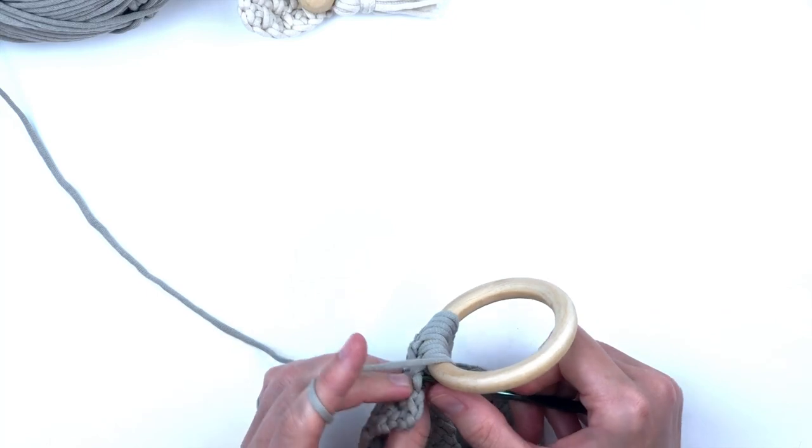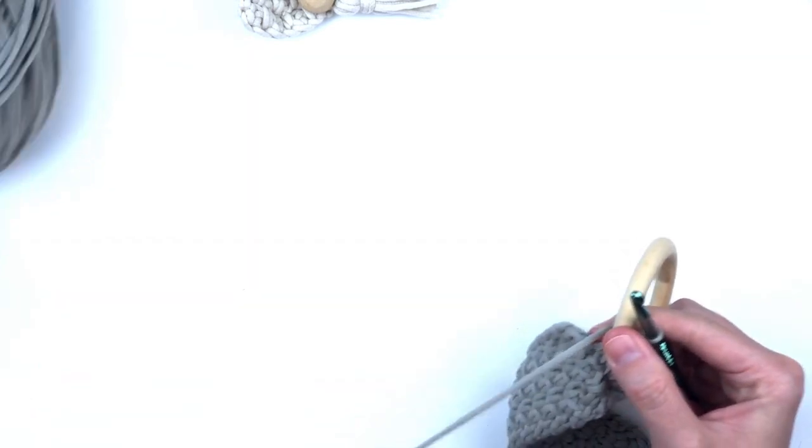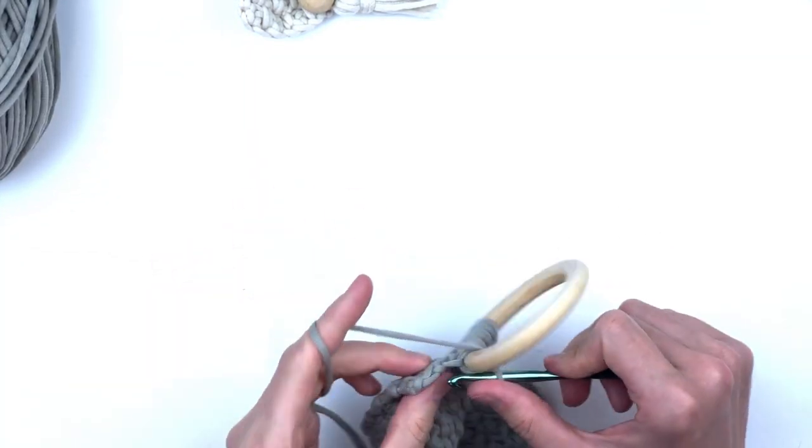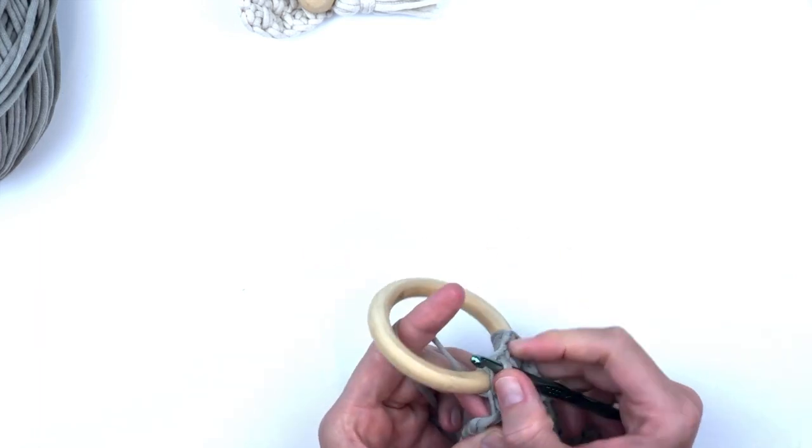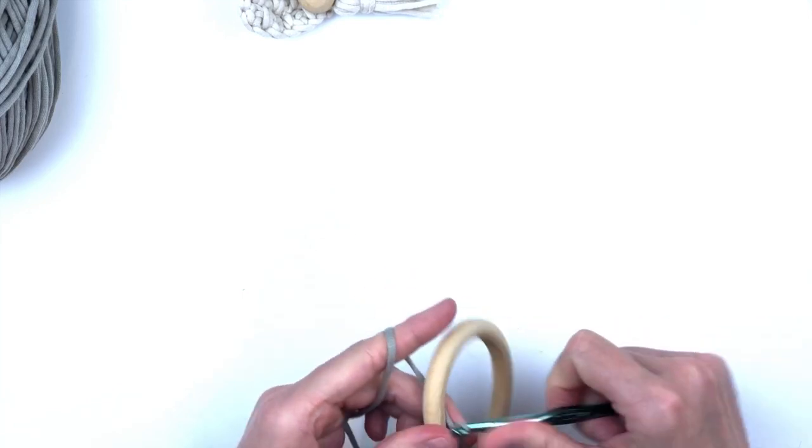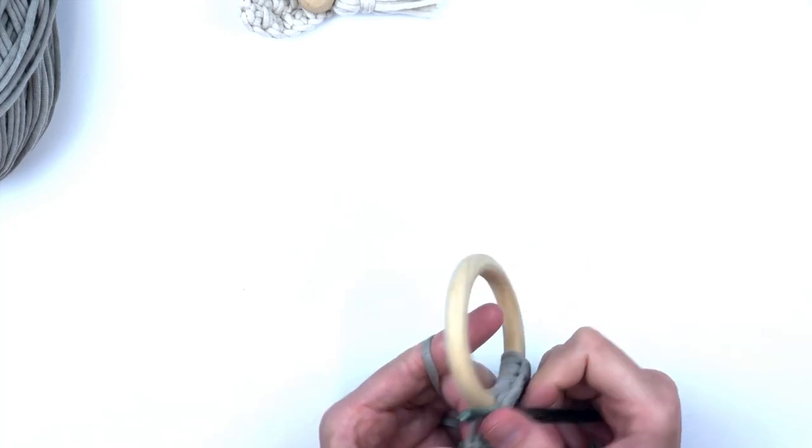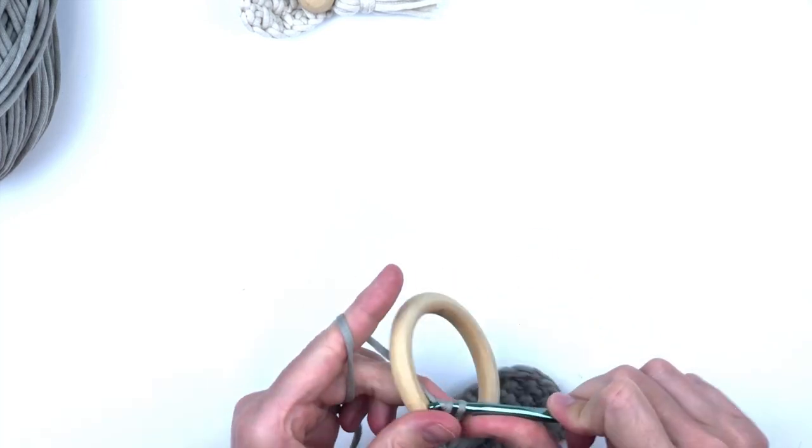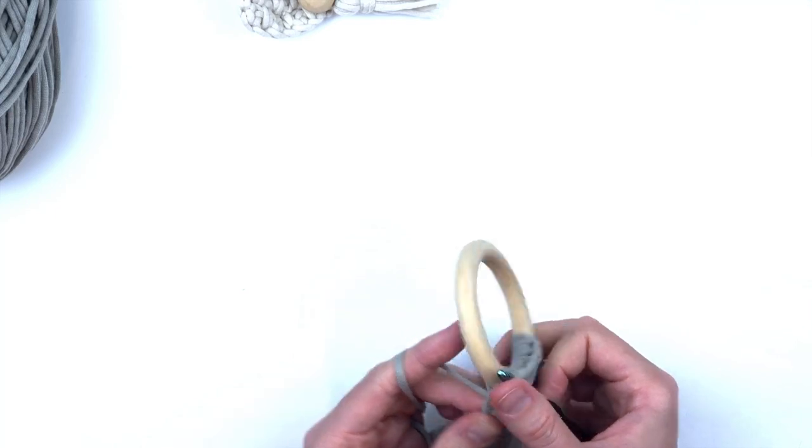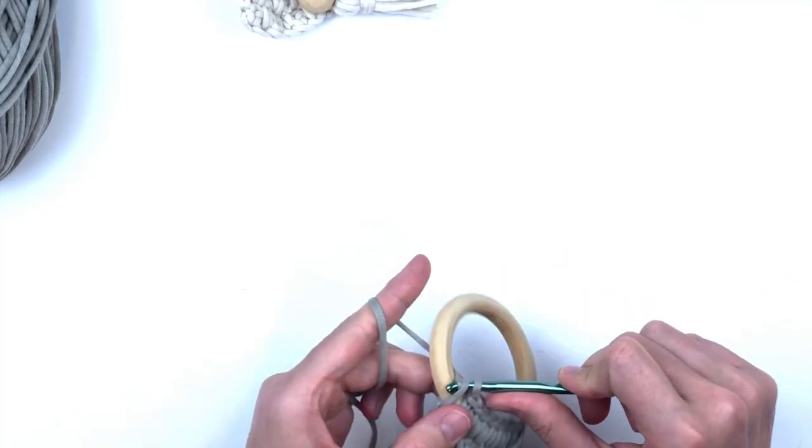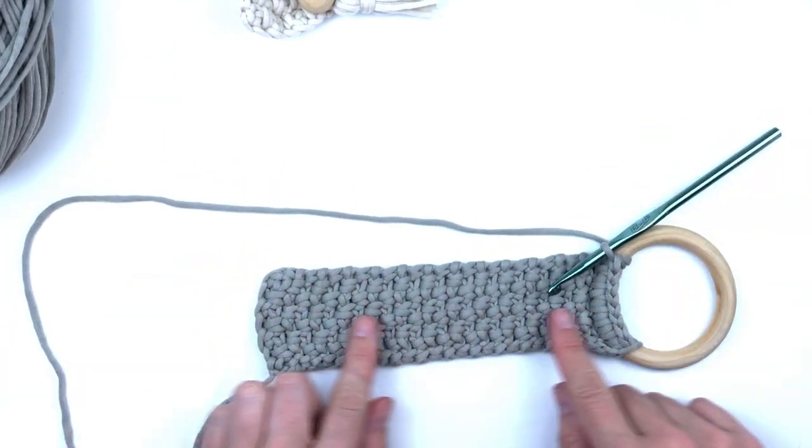I like using the front loop only because it makes a nice ribbing, but you could realistically go through both loops. Make sure that you don't forget the chain one at the end of the row. You should have eight single crochets in the wooden ring when you're finished. Now I'm going to leave myself a bit of tail to weave in and fasten off.